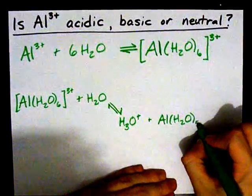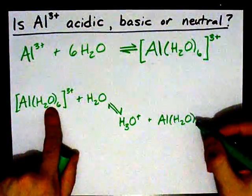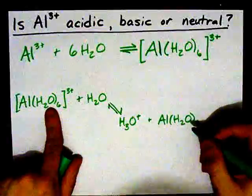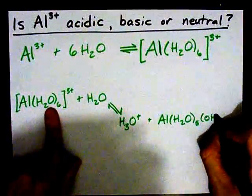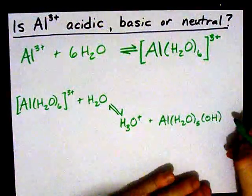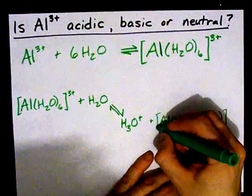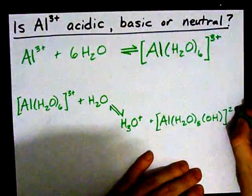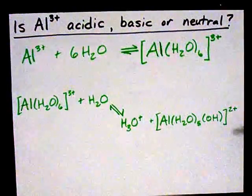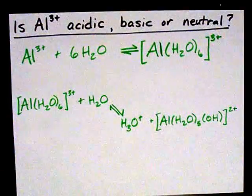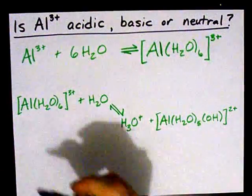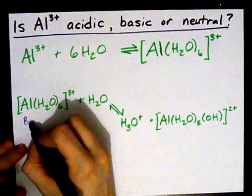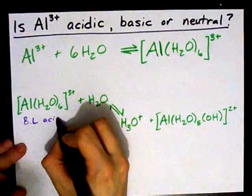Al H2O5, because one of these broke apart and gave an H away. And that broken H2O leaves behind an OH. This ion now has a 2 plus charge. This is our balanced chemical equation, which shows that Al H2O6 is a Bronsted-Lowry acid.